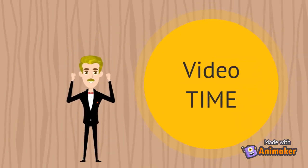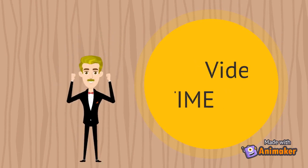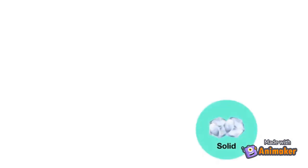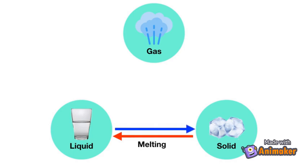It's movie time. Today we'll be learning about changes in the states of matter. There are three states of matter: solids, liquids, and gases. When a solid like ice turns into a liquid, we say it's melting. And if a liquid like water turns back into a solid, we say it's freezing. But there are names for all of the other types of changes that could exist as well.